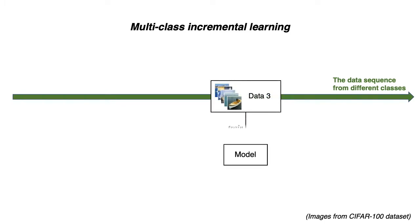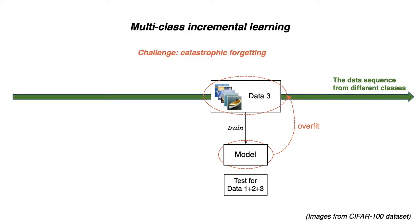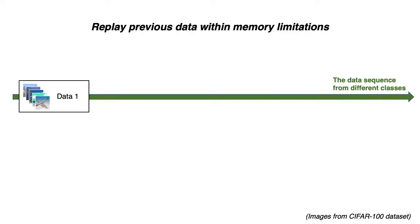It is known that the model is easy to overfit to the new phase data but forget the previous. This problem is called Catastrophic Forgetting. To tackle this problem, people generally allocate a small memory budget for previous data and use it in model training.